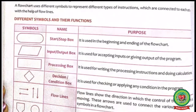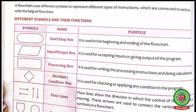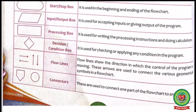The fourth one is the decision-condition box. If we use if-else conditions, we use this box — it is used for checking or applying any condition in the program. The fifth one is flowlines, which show the flow of the program and the direction the control is moving. Then there are connectors, used to connect one part of the flowchart to another part.